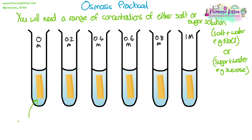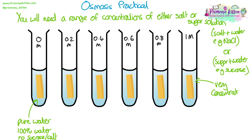We're going to need to make a range of different concentrations of either salt or sugar solution. You could be using salt water, for example sodium chloride, or dissolving a sugar in water like sucrose. You'll have a range of concentrations: pure water at zero molar — 100% water — at one end, and a very concentrated solution at the other end, such as one molar. The concentrated solution has much less water in it, and there's a range of concentrations in between.